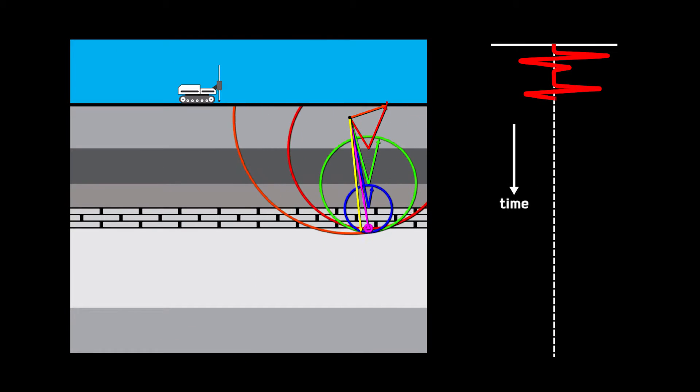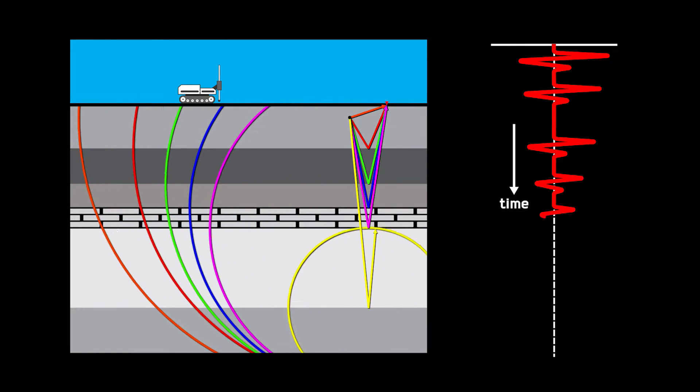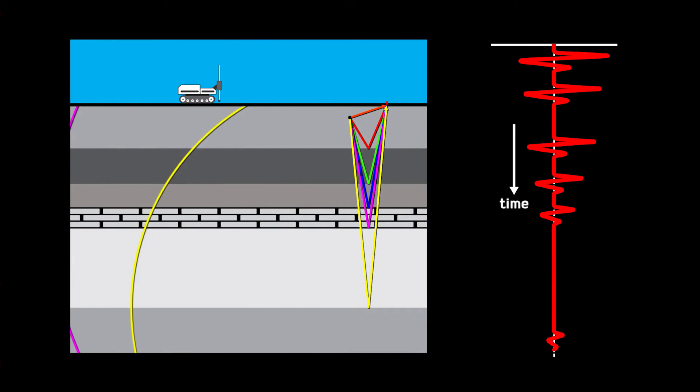Due to spreading loss and attenuation through the earth, the reflected waves weaken over distance and time. We end up with zero offset reflections, which represent geological contacts in time.